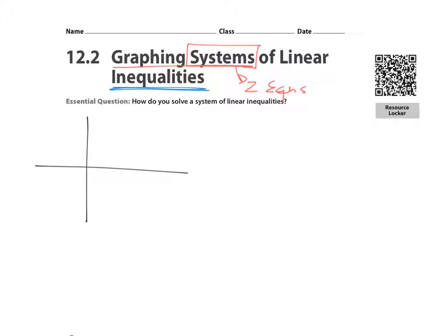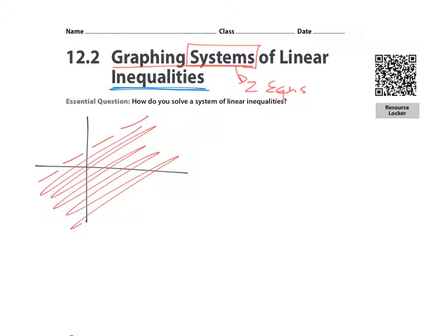So a quick little thing for you to put in your notes, maybe draw yourself just a quick sketch. Today we're going to have two inequalities. So we may have one that's dashed and we shade below. We may have another one that is going to be solid and let's say we shade above.